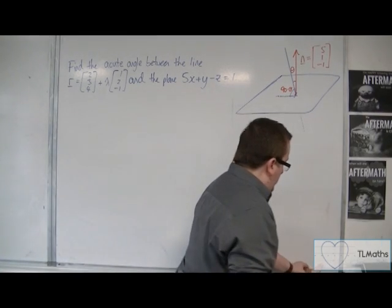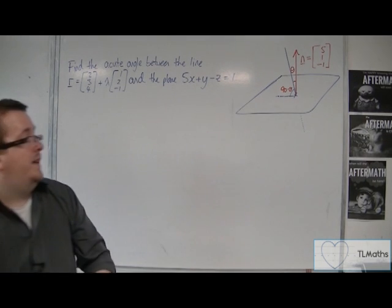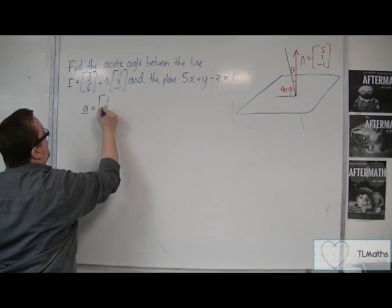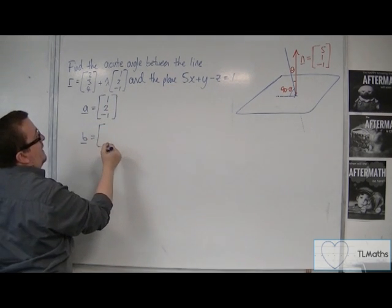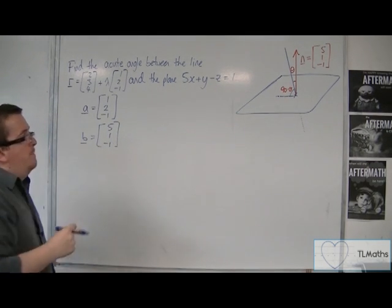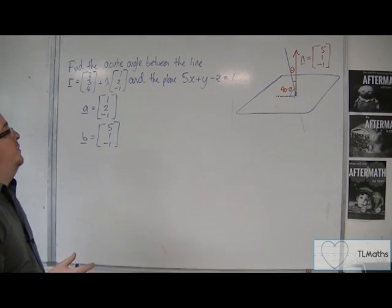That means that I can subtract theta from 90 degrees to work out the angle that I want. So what I'm doing here is finding the angle between the direction vector of the line and the normal vector, 5, 1, minus 1, of the plane.